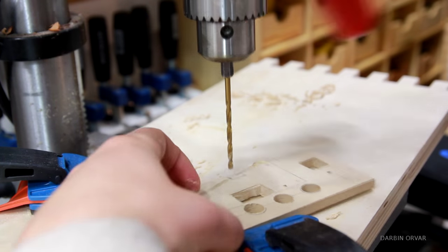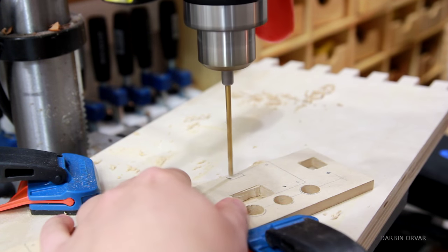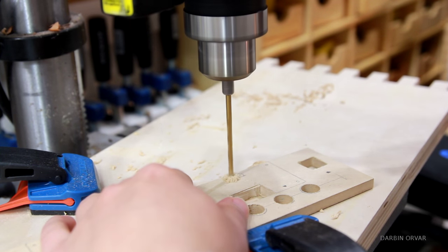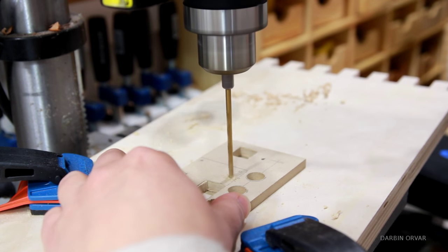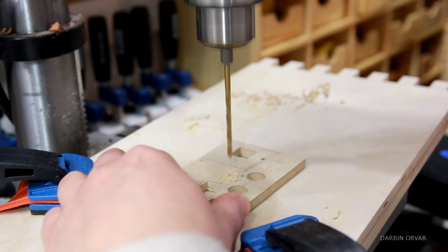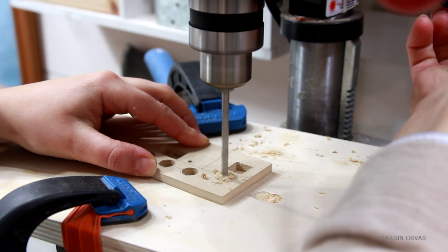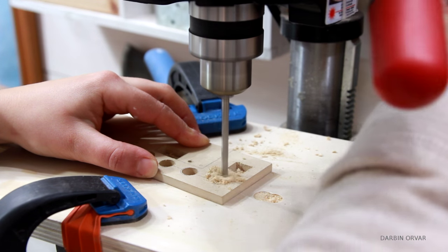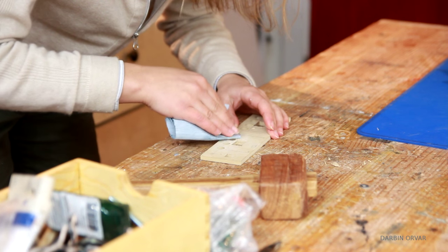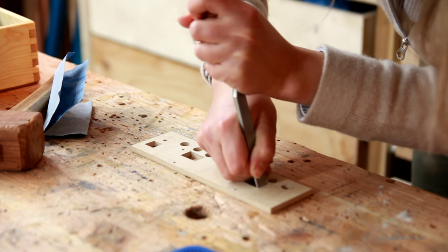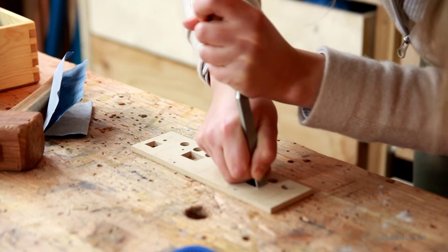Also drilling holes for areas that I need to access on the voltage regulators. A hole where you can insert a screwdriver to change the output, and a spot with a button to push to change the display on the screen. Then doing a little sanding, a little cleaning up with a chisel, and I'm ready to assemble the box together.